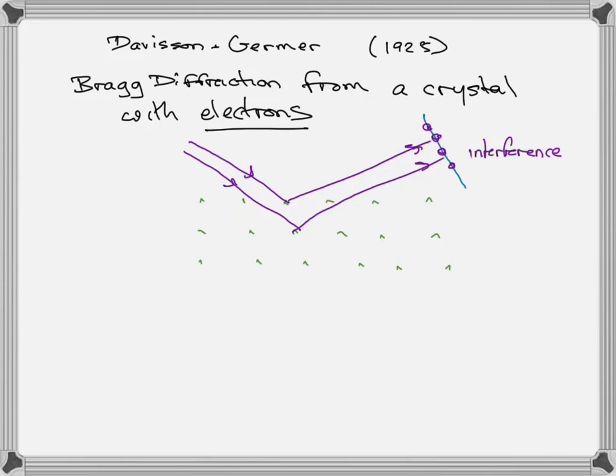We talked about interference from the point of view of light many times, and we know that light interferes, and that is a property of something that has a wave-like property. What was special about Bragg diffraction was that X-rays, which were not well understood in the early 1900s and couldn't be interfered through a normal diffraction grating — turns out because their wavelength was too small — did diffract from the crystal planes because the spacing of the crystal planes was more comparable to the wavelength of the X-rays.